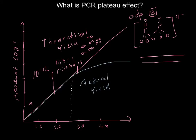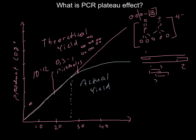Another reason is the formation of primer dimers. For example, with double-stranded DNA we have one primer on each strand. Primer one and primer two may have complementary bases that would not anneal at the beginning of the reaction, but at higher concentrations they can form primer dimers.